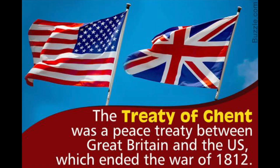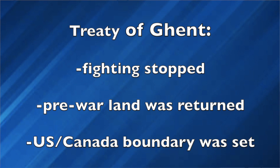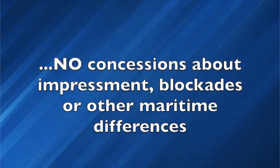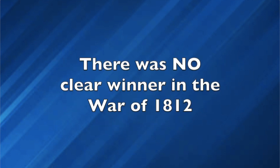By 1814, the British were weary of war, having fought Napoleon for more than a decade and now facing the prospects of maintaining peace in Europe. At the same time, Madison's government recognized that the Americans would be unable to win a decisive victory. American peace commissioners traveled to Ghent, Belgium, and on Christmas Eve of 1814, an agreement was reached. The terms halted fighting, returned all conquered territory to pre-war claimants, and recognized the pre-war boundary between Canada and the United States. The Treaty of Ghent said nothing about the grievances that led to war — Britain made no concessions on impressment, blockades, or maritime differences. The war ended in a stalemate with no clear victor.